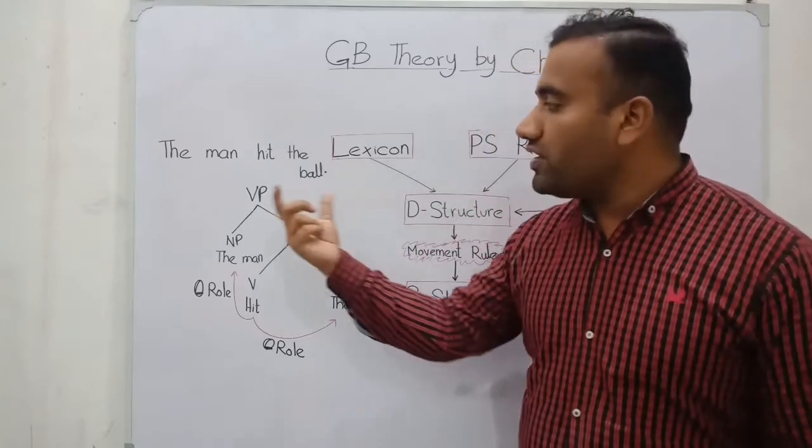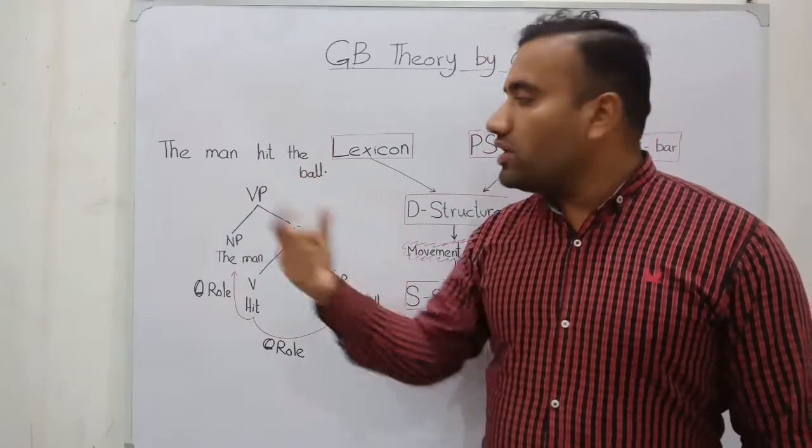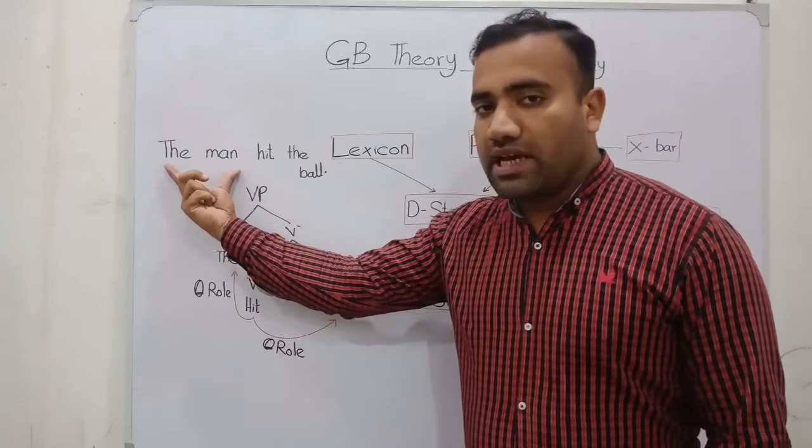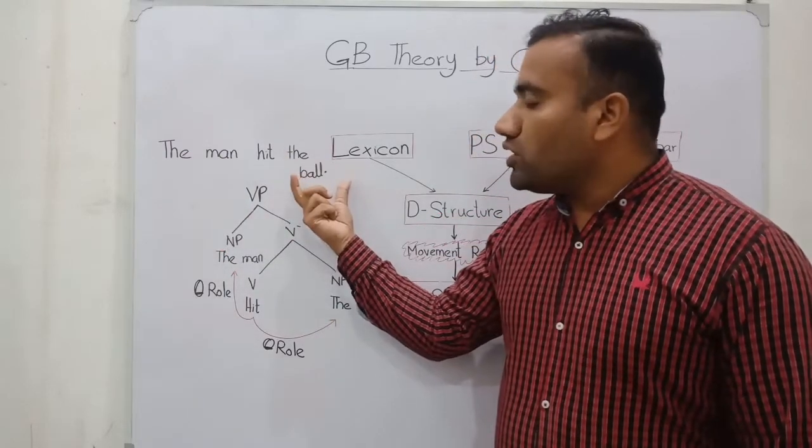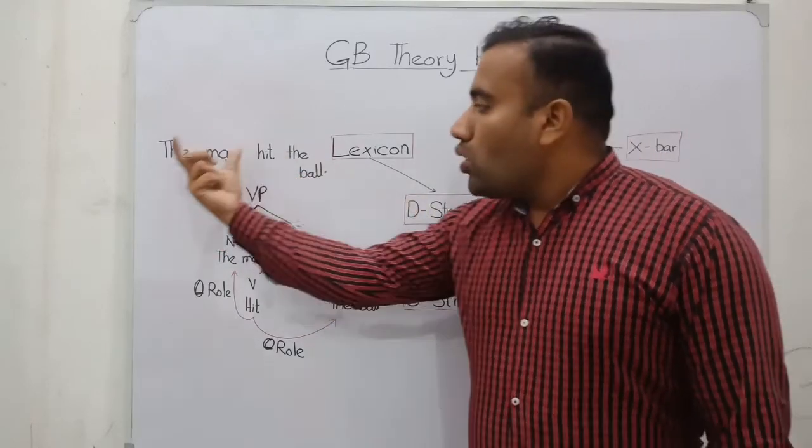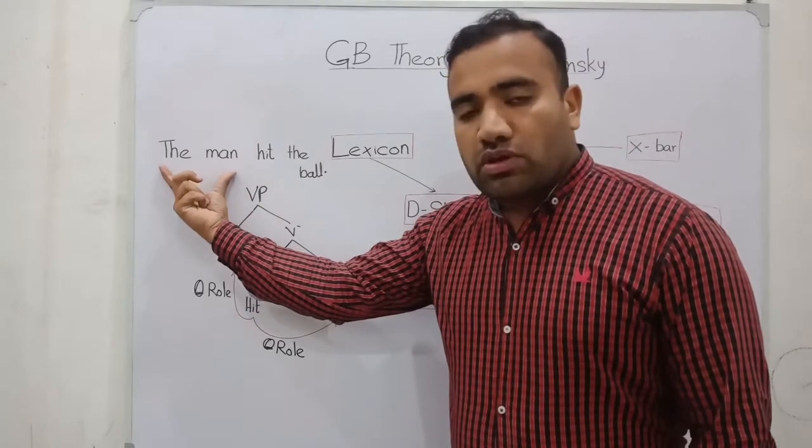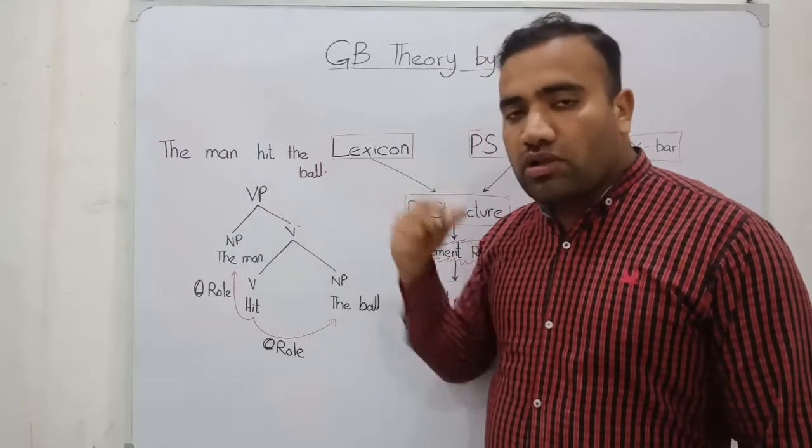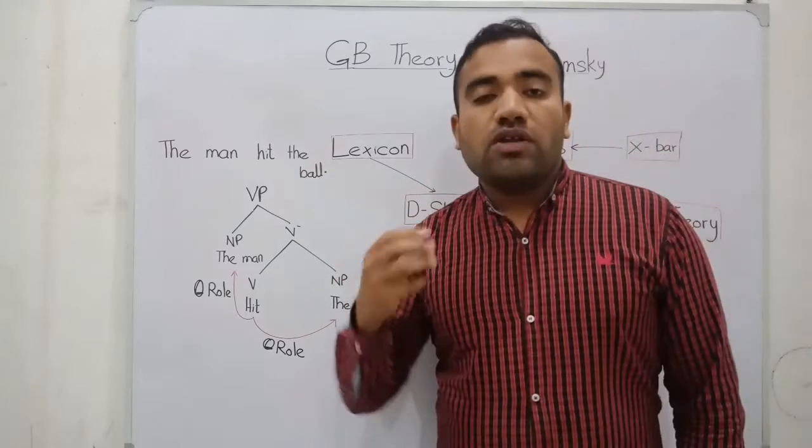In the sentence 'The man hit the ball,' we have two NPs: 'the man' is NP, 'the ball' is the NP. Here one role is assigned to the man and the second role is assigned to the ball.